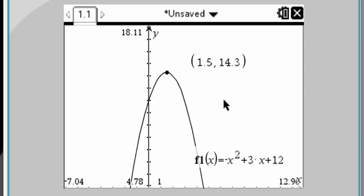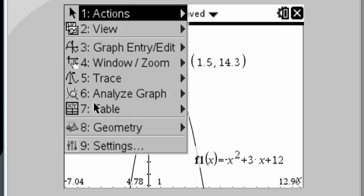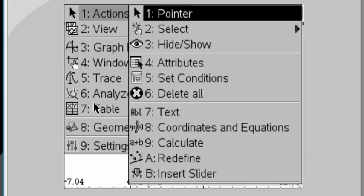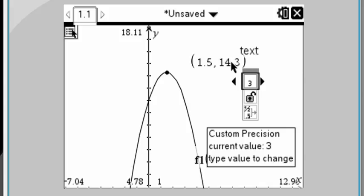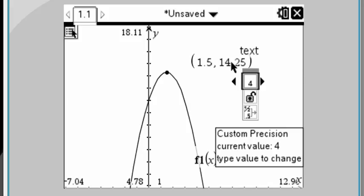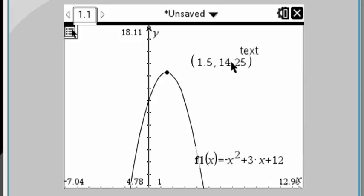And you can move this text over a little bit. And similar to what we did before, we're going to change the precision of that y-coordinate. Press the menu key. Choose actions. Select number 4 attributes. And we want to change the attribute of this text. And we're going to change the precision from 3 to 4. And there we go. 14.25. All right. Hope this video helped. Thanks for watching.